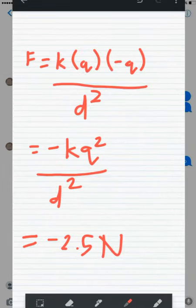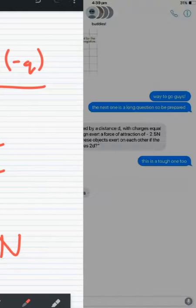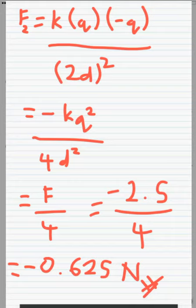We use formula F equals k times q times negative q over d squared, and we get negative kq squared over d squared, and we get negative 2.5 newtons.